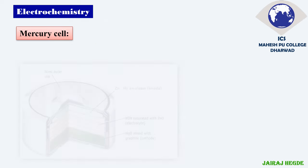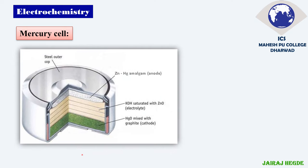Let us go for one more important cell: the mercury cell. We use this cell for low-power instruments like watches, hearing aids, and earbuds — where very low current is required. In its construction, zinc amalgam acts as the anode, and a paste of graphite and mercury oxide acts as the cathode. The electrolyte is a saturated solution of KOH and ZnO. The entire cell is covered with a steel outer casing, with the anode producing negative charge and the cathode at the bottom producing positive charge.